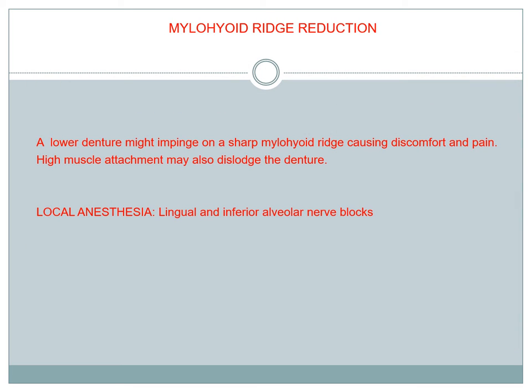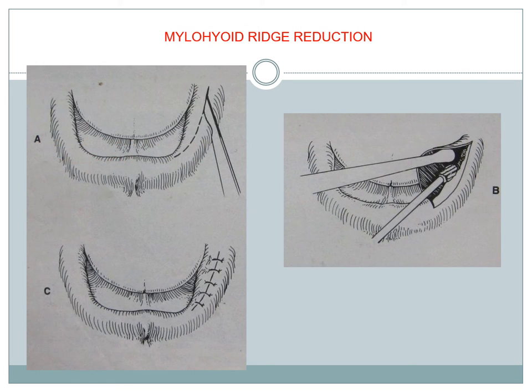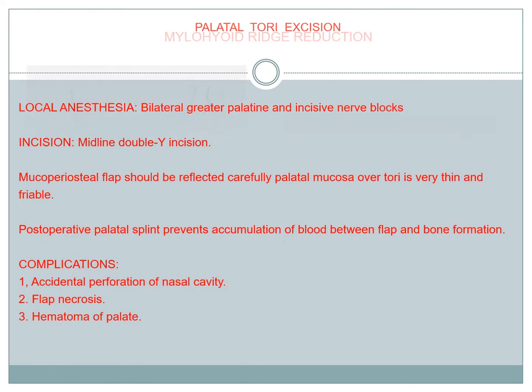Next is mylohyoid ridge reduction. Mylohyoid ridge reduction is indicated when, for a denture, there will be impingement on the sharp mylohyoid ridge causing discomfort and sharp shooting pain. High muscle attachment also causes dislodging of the denture. We give a block, place an incision on the crestal region, and reduce the sharp margins with a bone file or burr.